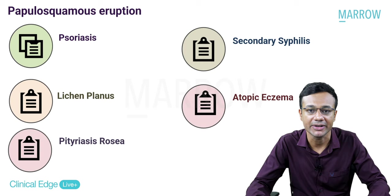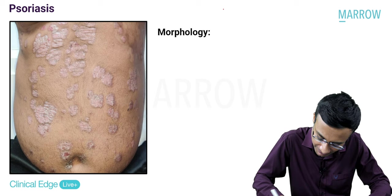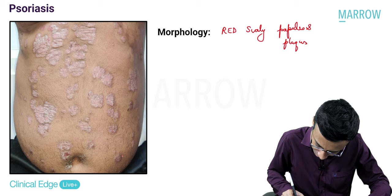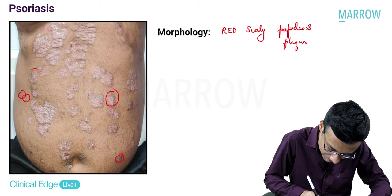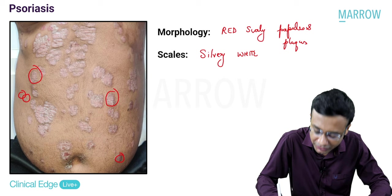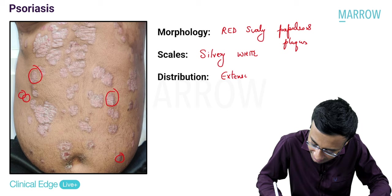When we look at psoriasis, the patient presents with red scaly papules and plaques - smaller ones are called papules, larger ones are called plaques. The scales of psoriasis are described as silvery white scales. Generally, the distribution of psoriasis is on the extensor aspect of the body. These are the important points to make a diagnosis of chronic plaque psoriasis.